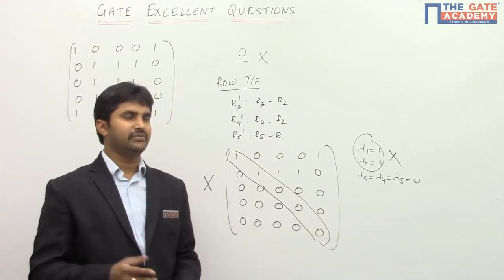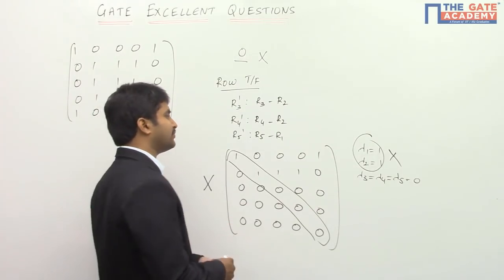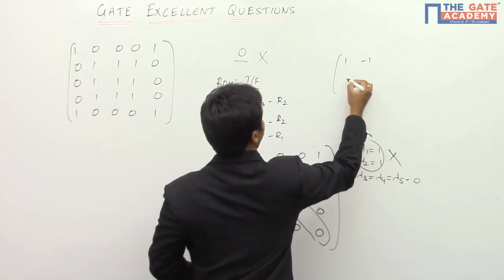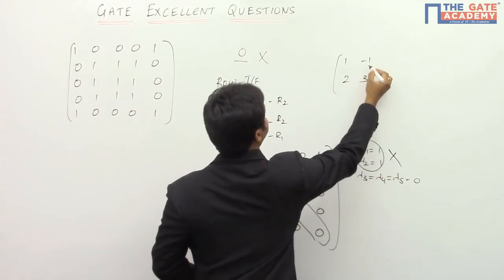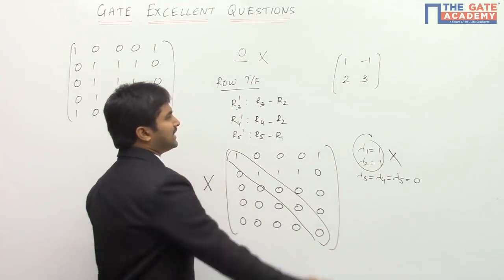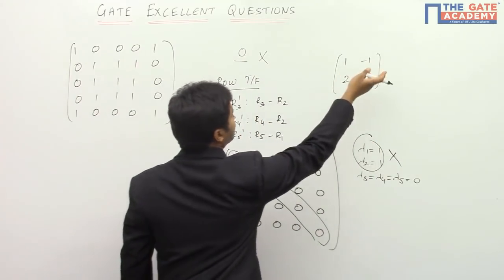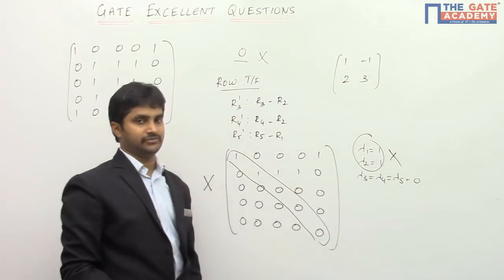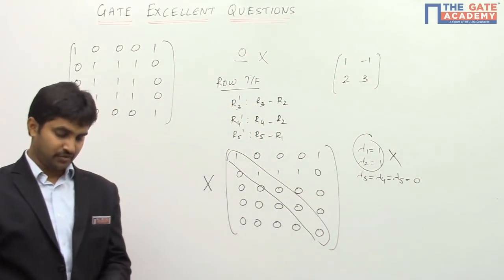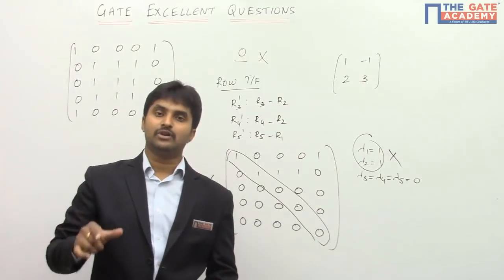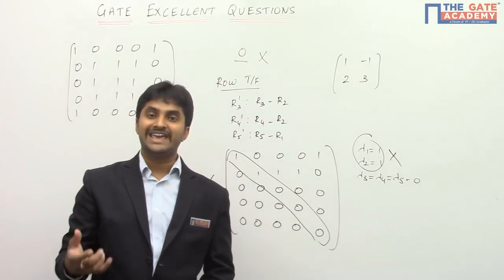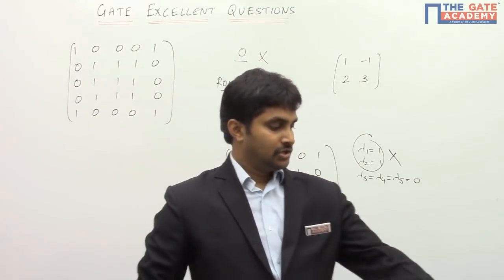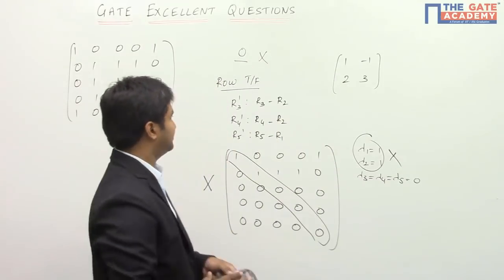If you are not satisfied, you can take any simple matrix — maybe a 2×2 matrix like [[1,-1],[2,3]] — and directly find the eigenvalues, then compare after applying a row transformation. You will observe that after row transformation the eigenvalues are going to change. So row transformation is not the correct method for finding eigenvalues.